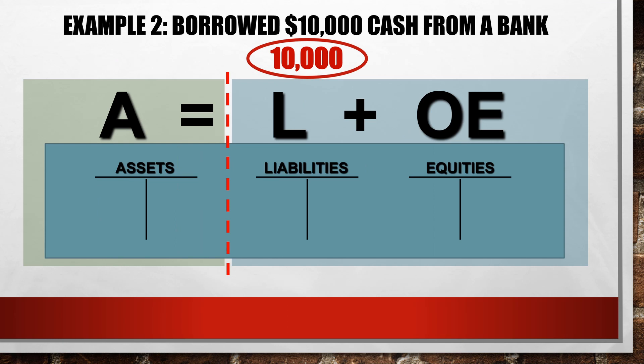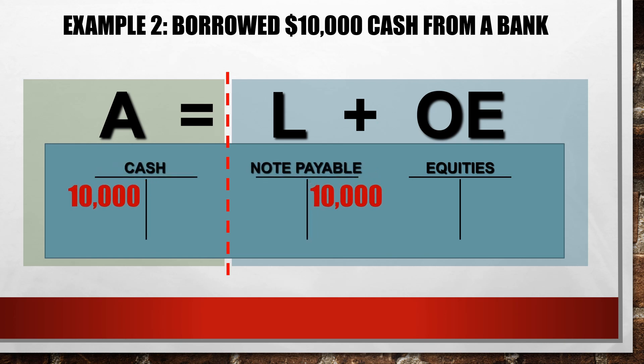In the next transaction, we borrow $10,000 from a bank. The cash account will increase by $10,000. An increase in an asset account is shown with a debit, so this amount is put on the debit or left side of the ledger account. An increase in a liability account is shown with a credit, so the $10,000 is put on the credit or right side of the ledger account. Note that the debit is equal to the credit.